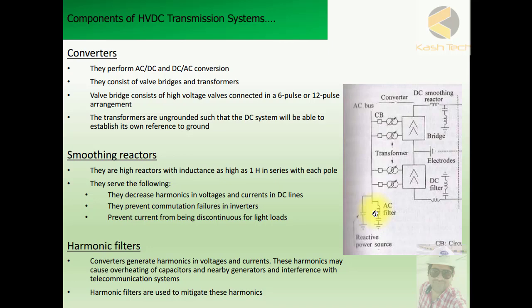The smoothing reactors can store energy, so they fill the ripples — similar to a capacitor in DC systems used to remove ripples and make the DC supply smooth. They also suppress transients and protect the communication network from transient surges. Additionally, they prevent current discontinuity for light loads by filling the gaps.